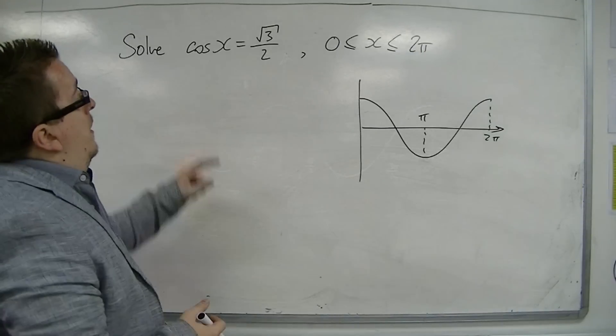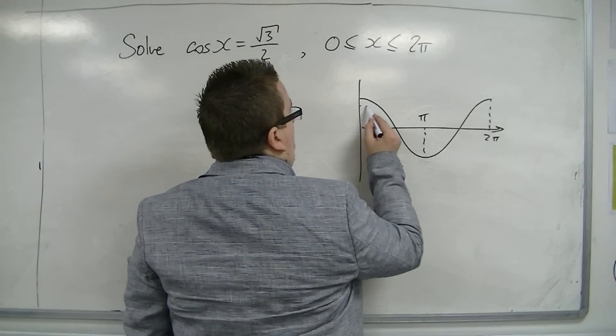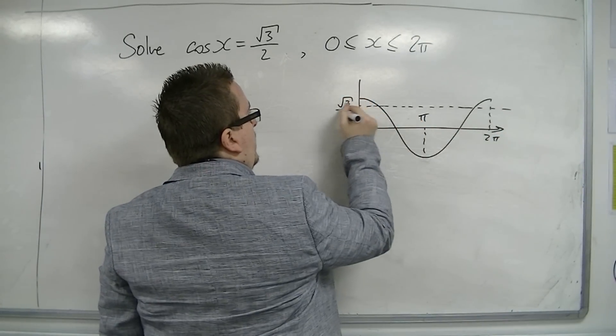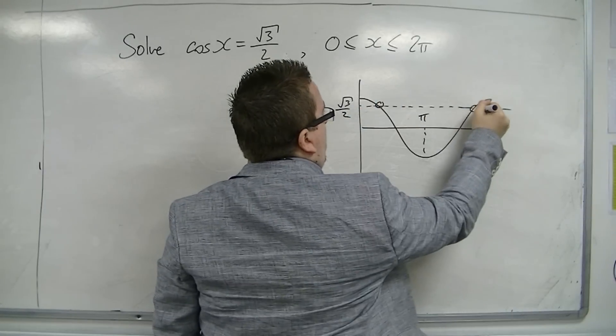Okay, so, root 3 over 2 is about there on my curve, okay, crossing the curve in two places, one there, one there.